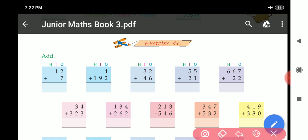7 plus 2, 9 and 1 comes here, so answer is 19. Here 4 plus 2, 6, 9 and here 1, 1, 9, 6.